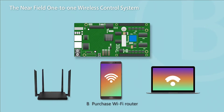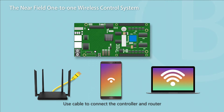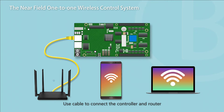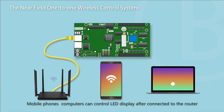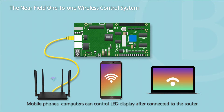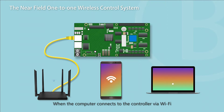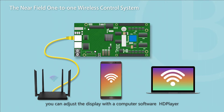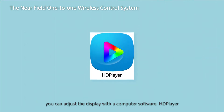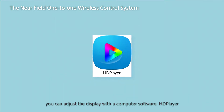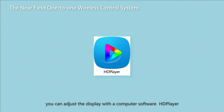Option B: Purchase a Wi-Fi Router and use a cable to connect the controller and router. Mobile phones and computers can control the LED display after connecting to the router. When the computer connects to the controller via Wi-Fi, you can adjust the display with the computer software HD Player.